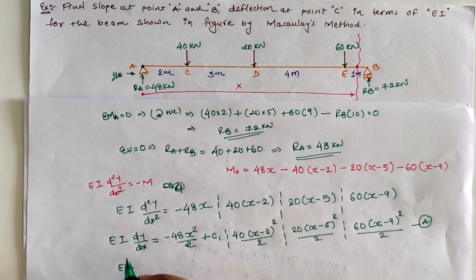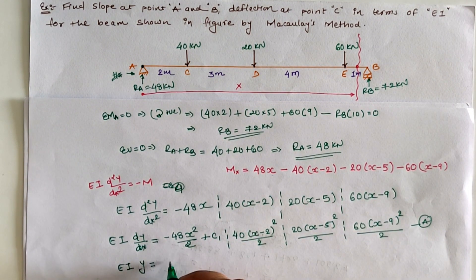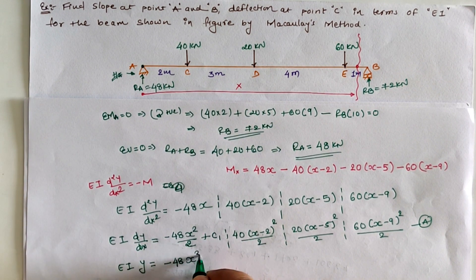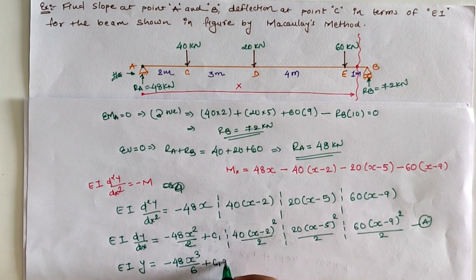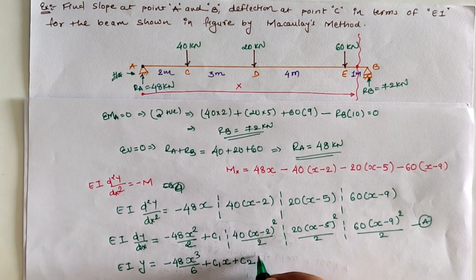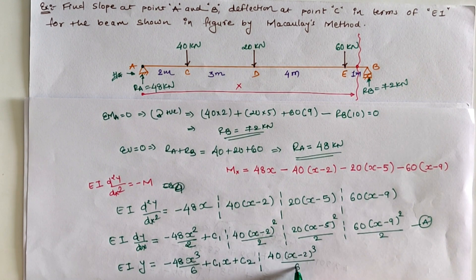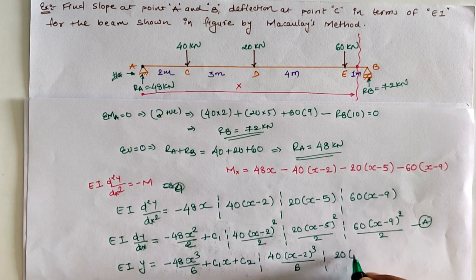Integrating again, we get the deflection equation: EI y = 48x³/6 + C1·x + C2 − 40(x−2)³/6 − 20(x−5)³/6 − 60(x−9)³/6. These are equations A and B for slope and deflection respectively, with two integration constants C1 and C2 to be determined.